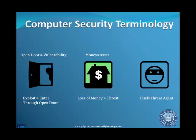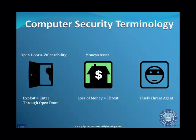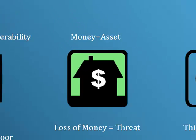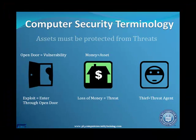Basic information security terminology: these terms are asset, threat, threat agent, vulnerability, exploit, and risk. Consider this analogy: a house that has money inside. The money stored in the house is an asset, meaning that it has value. Anything that the money must be protected from is a threat.